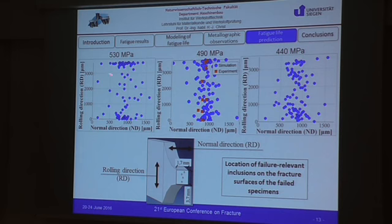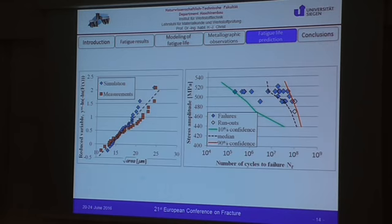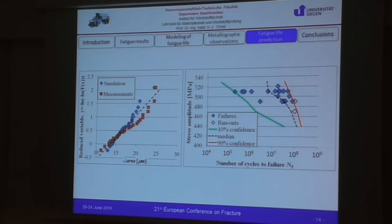We can compare our experimental and simulation results relating to the size of inclusions. We can see good agreement, and we can see that the inclusions tend to concentrate in the middle of the specimen and that the amount of failures on the surface decreases with decreasing stress amplitude. On the basis of our Monte Carlo simulations it was also possible to calculate the 10% and 90% confidence bands for our inclusions.